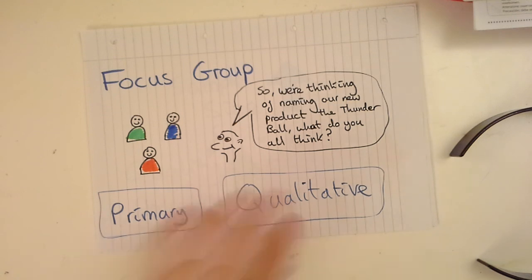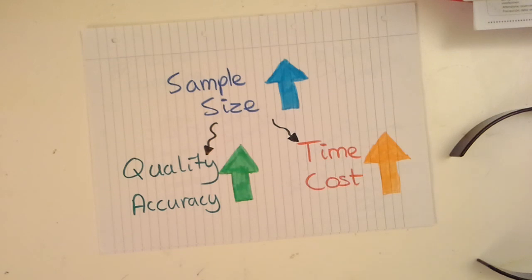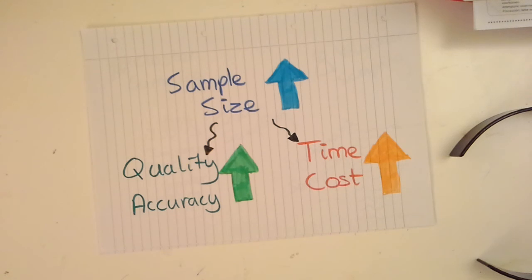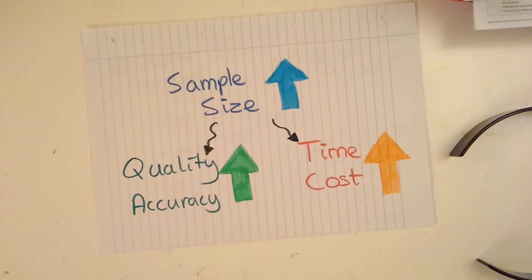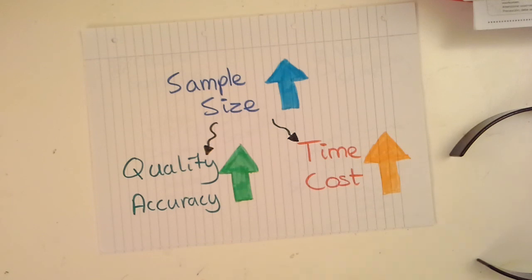We need a lot of people to make the research accurate — this applies to a lot of market research. As we increase our sample size — how many people we interview, how many fill out a survey, or how many shopping bags we look at — the accuracy of the research goes up, but so does the cost and time. If we only ask one person, it won't take long and won't cost much, but it won't be representative. We might have one rude staff member who serves that customer, giving us a really negative review that skews our data. We want to spread surveys over the course of a week to get a better idea of what our customer service is actually like in general.